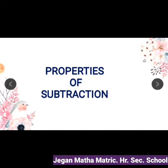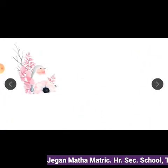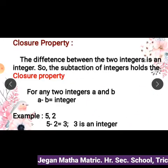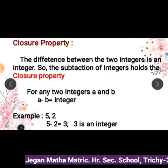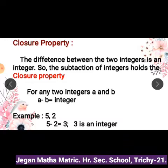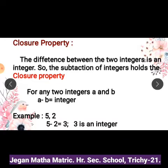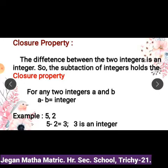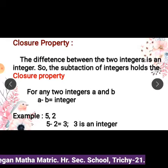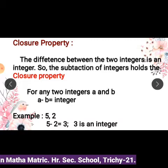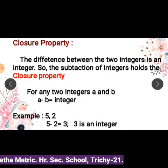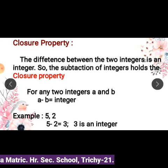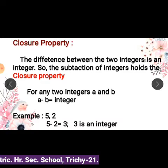Now we learn the closure property of subtraction of integers. The difference between two integers is an integer. For any two integers a and b, a minus b is equal to an integer. For example, the two numbers 5 and 2 — the difference between 5 and 2 is 3. Here 3 is an integer. So subtraction of integers holds the closure property.